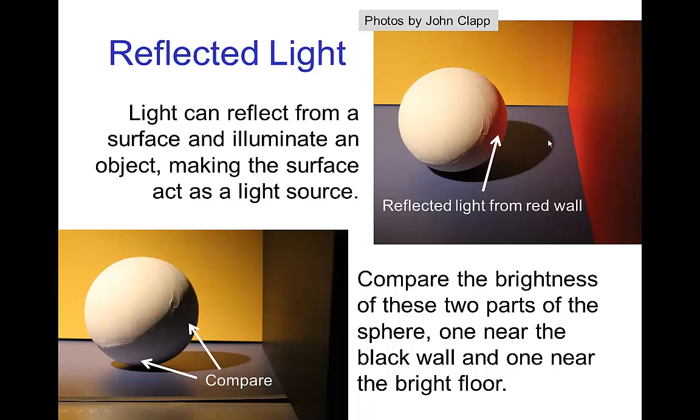If we only had a single spotlight shining on it and no reflected light, then it would be completely dark behind the sphere. However, due to the proximity of this illuminated red wall behind the sphere, we see red light shining from that red wall illuminating the back of the sphere.